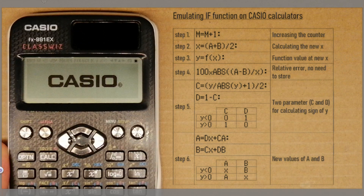Fourth, we must know the actual width of the range. In this example, I use the relative absolute error — no need to store this value. Then we calculate two parameters, c and d, which indicate the sign of y. If y is negative, c equals 0 and d equals 1. If y is positive, c equals 1 and d equals 0.